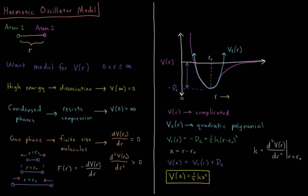In this video, we start discussing our second quantum mechanical model system, which is called the harmonic oscillator, which is a model for how atoms vibrate.